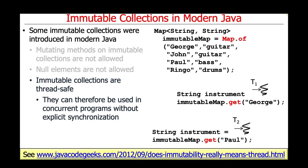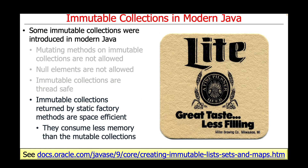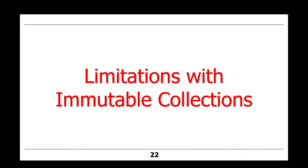Immutable collections can therefore be used in concurrent programs without requiring explicit synchronization. As you can see here, two different threads — T1 and T2 — can be calling get operations on the immutable map without having to have any explicit synchronization in the code. And finally, immutable collections returned by static factory methods are space efficient, since they consume much less memory than the mutable collections.